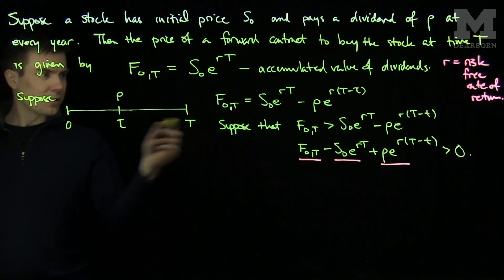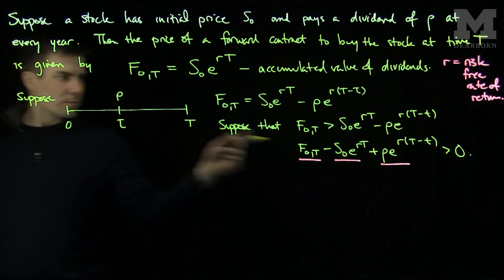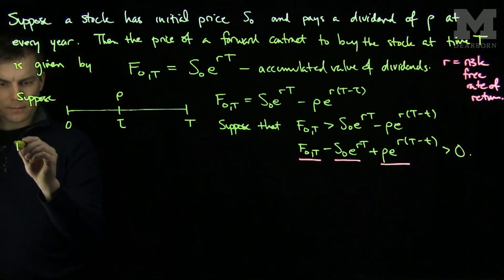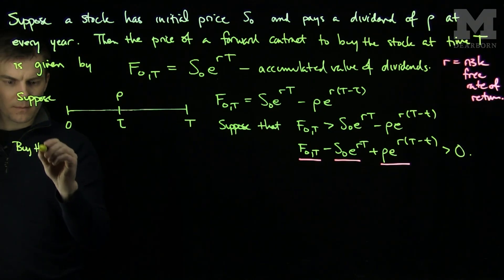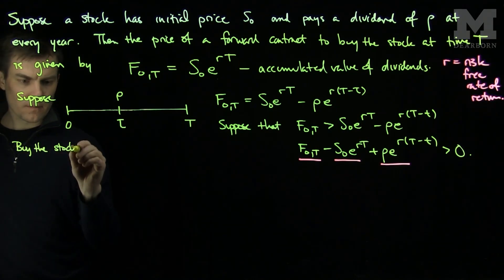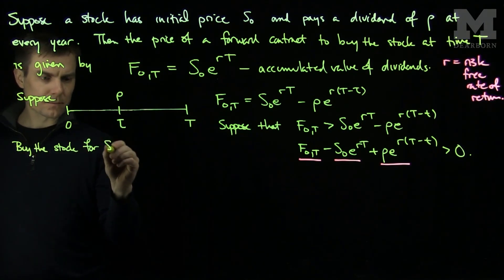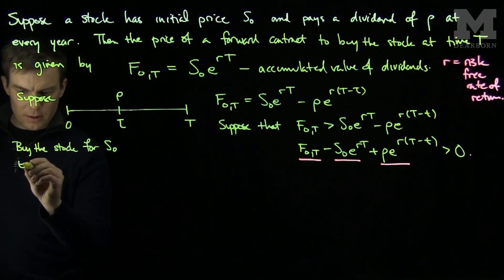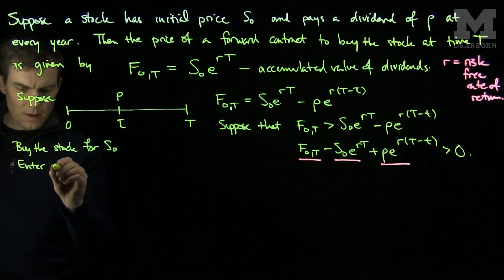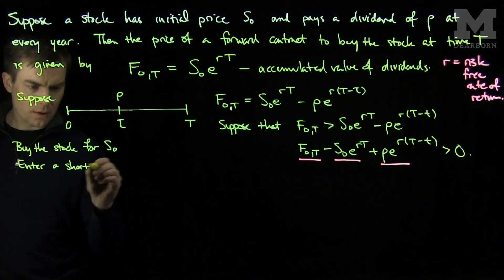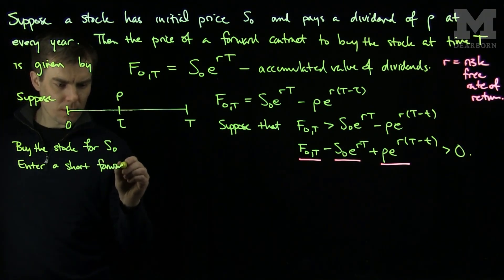What we'll do is, in this situation, we will buy the stock for S0. We will enter a short forward contract.